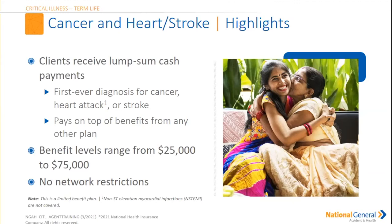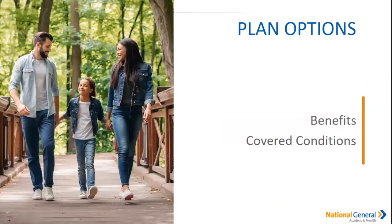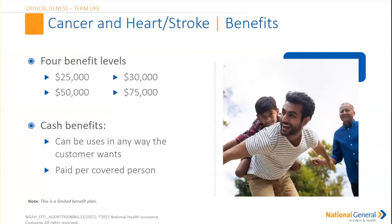Benefit levels range from $25,000 to $75,000, and there are no network restrictions. We have four benefit levels: $25,000, $30,000, $50,000, and $75,000. A cash benefit can be used in any way that the customer sees fit, paid directly for any and all covered persons on the policy. If you have a household of five people and only two are on that policy, the only persons covered are those named on the policy.